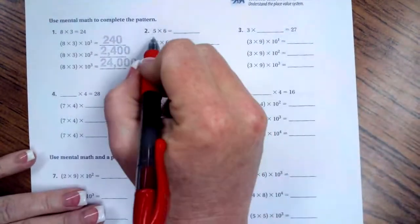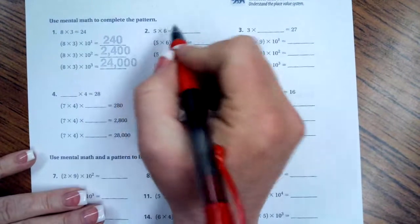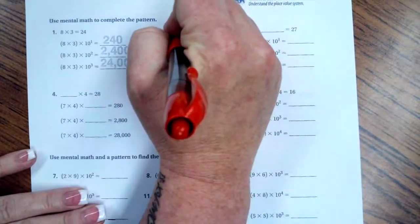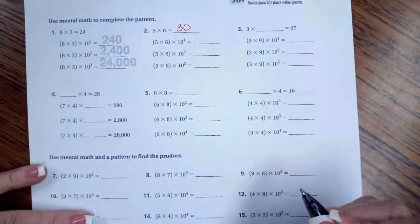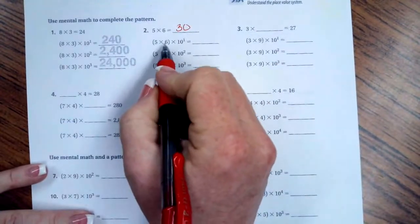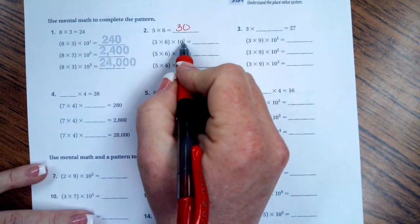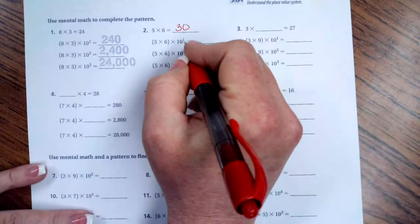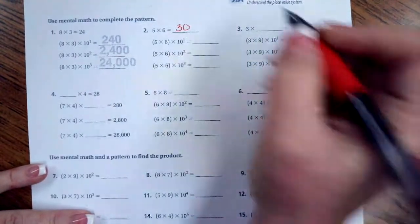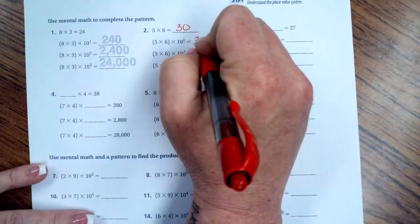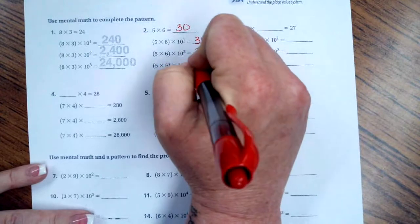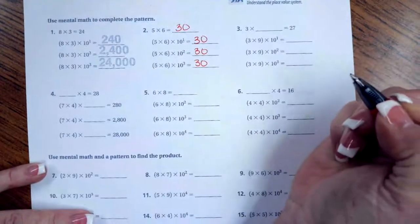All we're doing for these guys is following along. So, 5 times 6, that's going to be 30. 5 times 6 times 10 to the 1st, which means we're adding a 0. So, we have our 30. That's going to be our base for all of these.